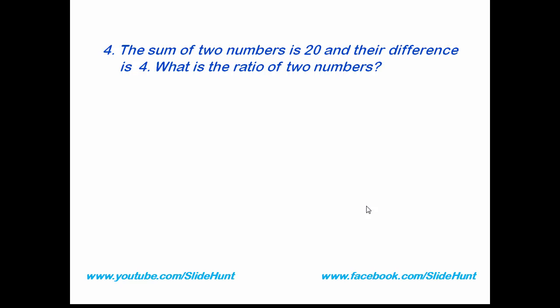Question number 4: The sum of two numbers is 20 and their difference is 4. What is the ratio of two numbers? To solve this problem we have two methods: one is traditional method and another is shortcut method. Traditional method takes more time, so we follow the shortcut method.